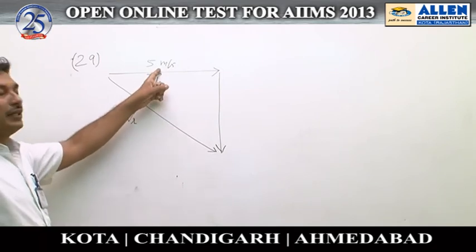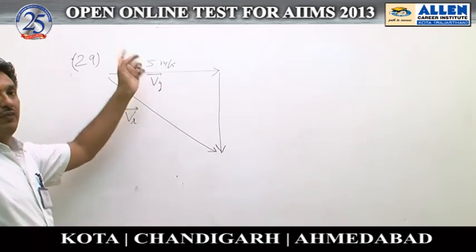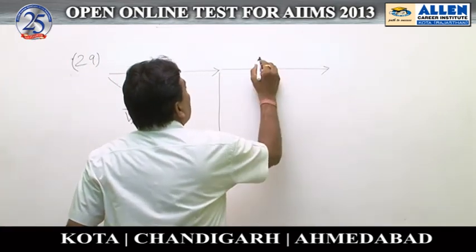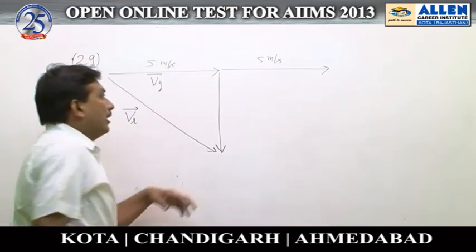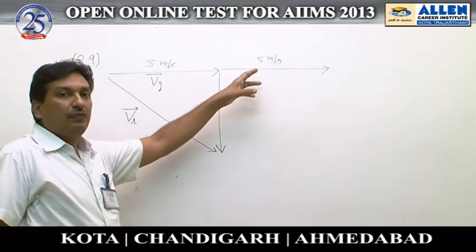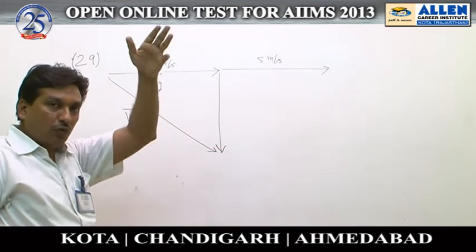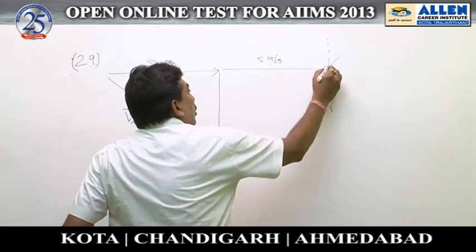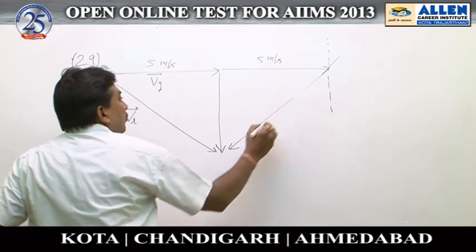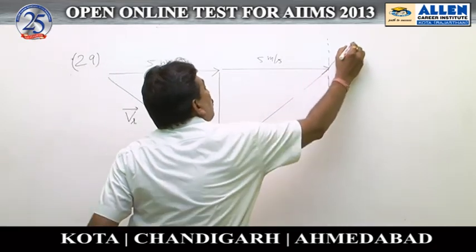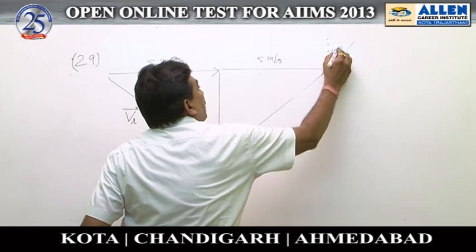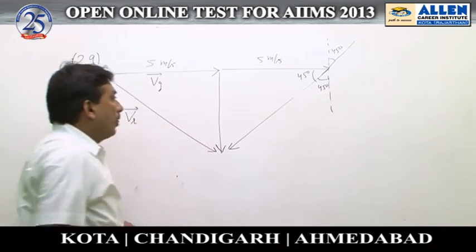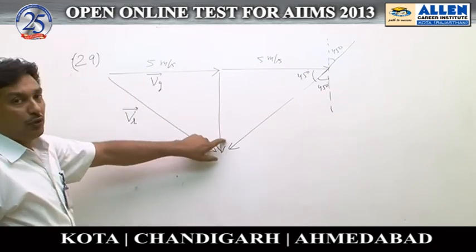The girl increases her speed by 5 meters per second, so that is an additional 5 meters per second. At that point, the girl feels that raindrops are falling at an angle of 45 degrees with the vertical. So that angle from the vertical is 45 degrees, which means this angle is also 45 degrees.